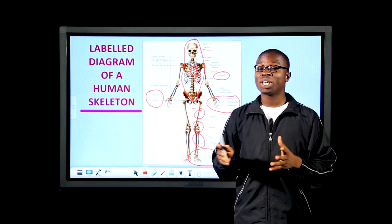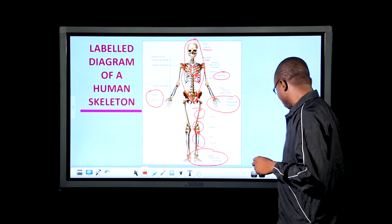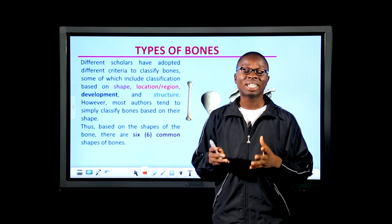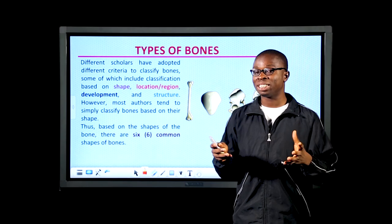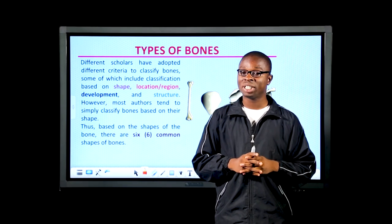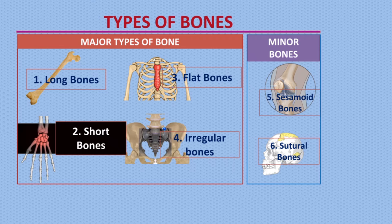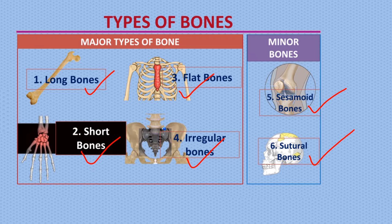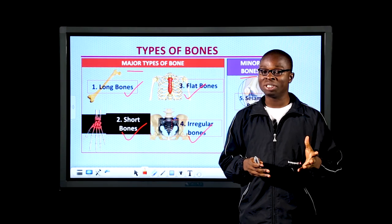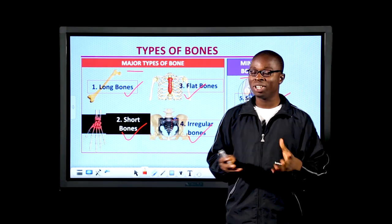Moving forward, let's talk about the different types of bones. Different scholars classify bones based on their location, shape, size, and function, but for this lesson we'll classify bones based on their shape. There are six types of bones: long bones, short bones, flat bones, irregular bones, sesamoid bones, and sutural bones. The first four are classified as major bones while the last two are minor bones. Our focus will be on the major bones.